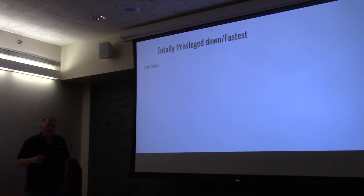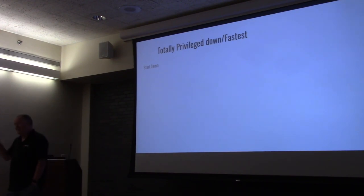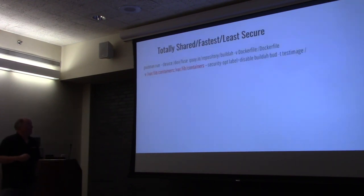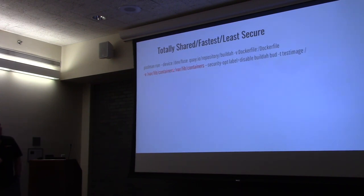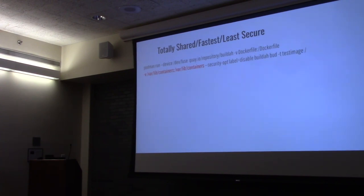Now we're going to look at the total opposite equation. If I'm running Buildah inside a container and want to run as fast as possible, I need to take the containers from the host and mount them into the container. We're still using fuse-overlay, but this time we're going to volume-mount /var/lib/containers from the host into the container. This means that if Podman had previously pulled ubi8 into its database, it will be available inside the container.